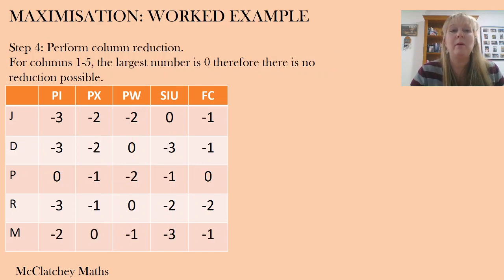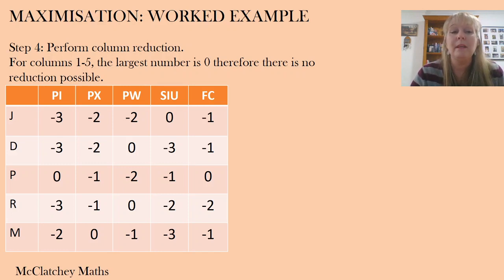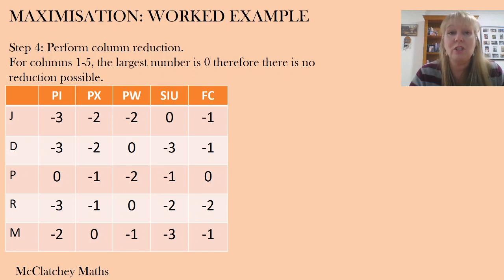When we don't reach the required number of lines, we perform column reduction. However, if you look down the columns to find the largest number, it's zero in every column. So we actually can't do column reduction in this case and need to move on to the next step.